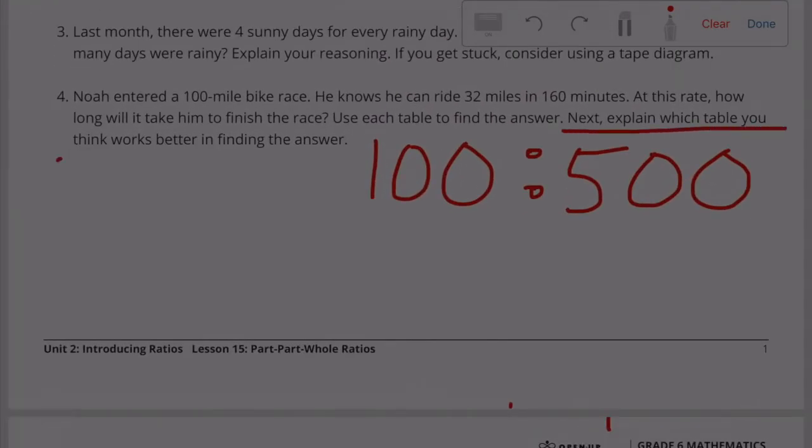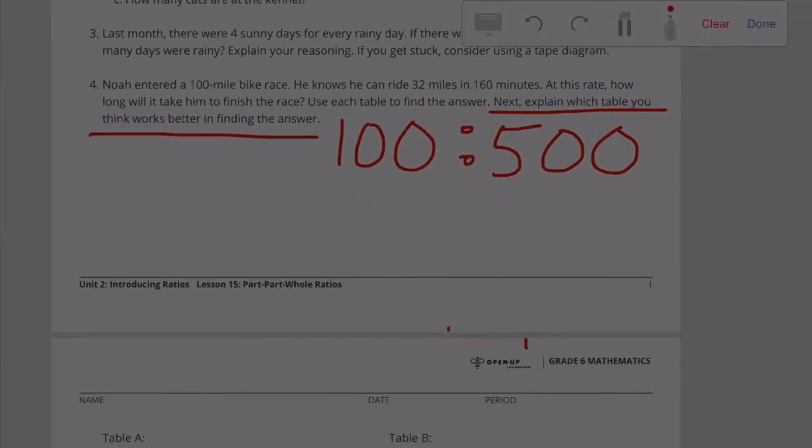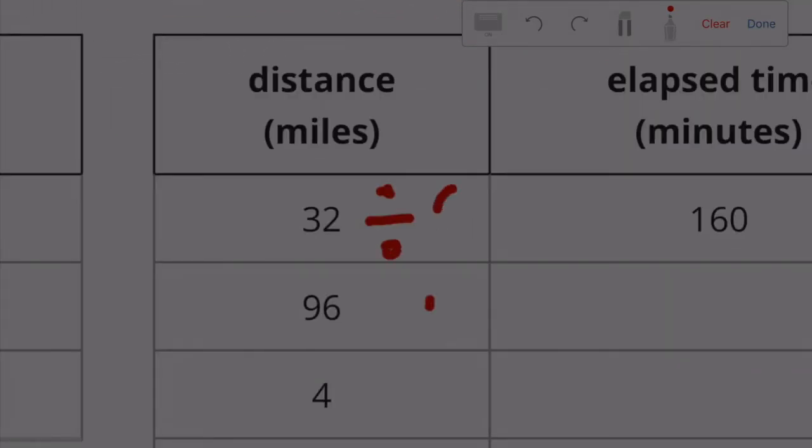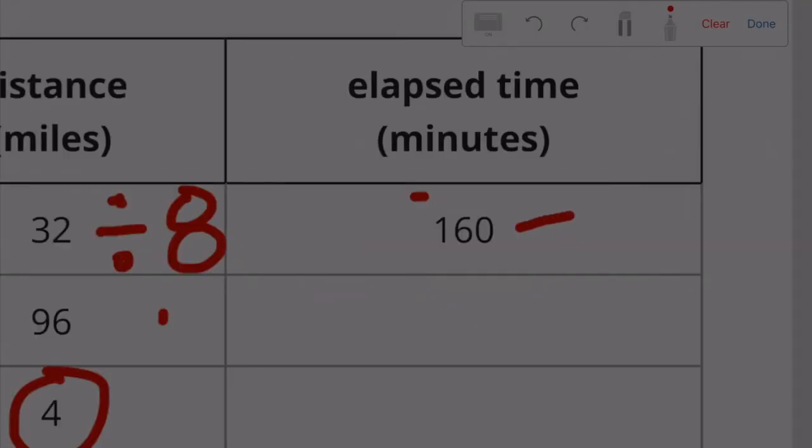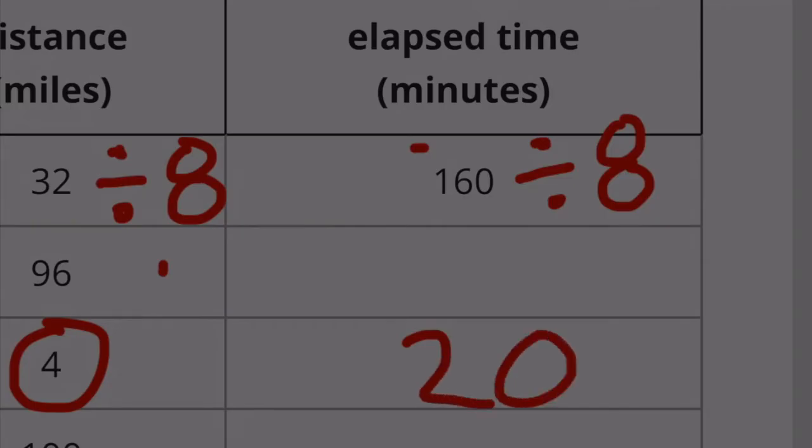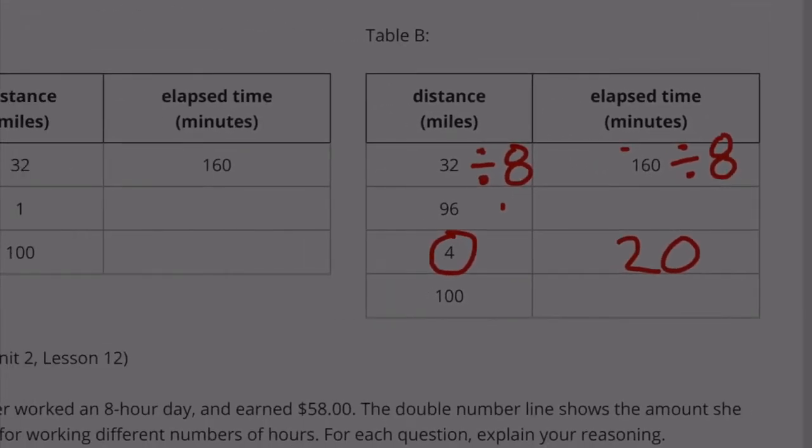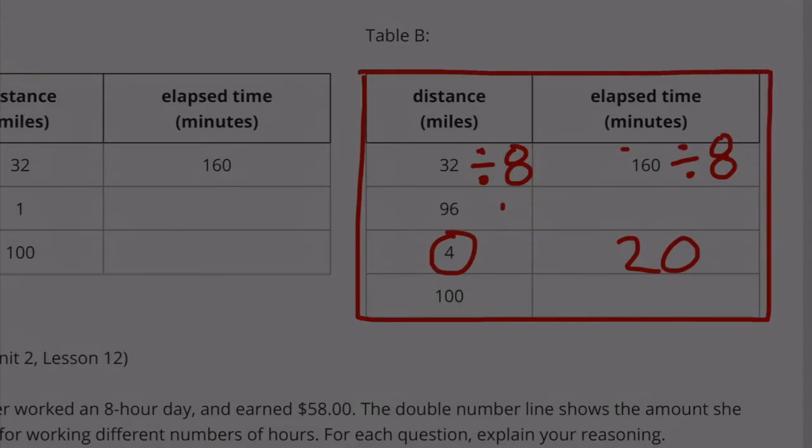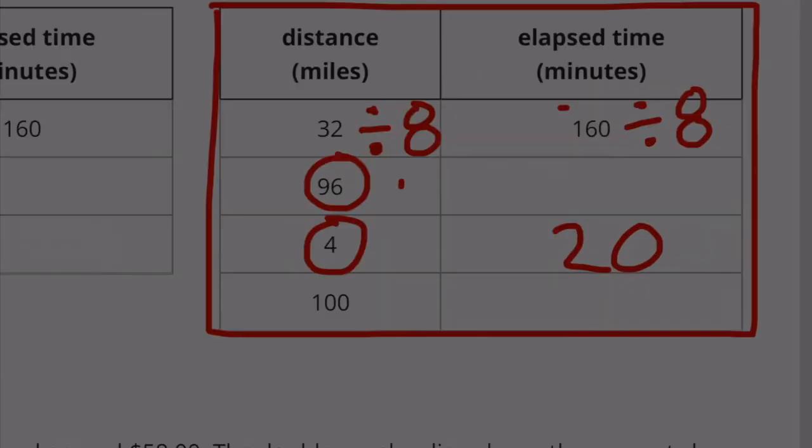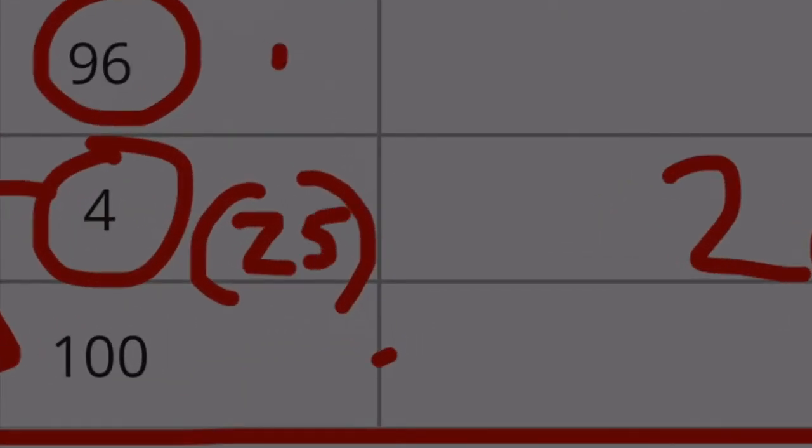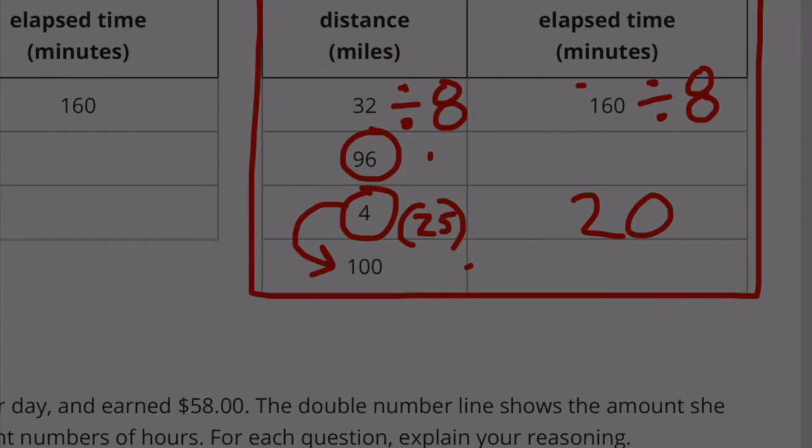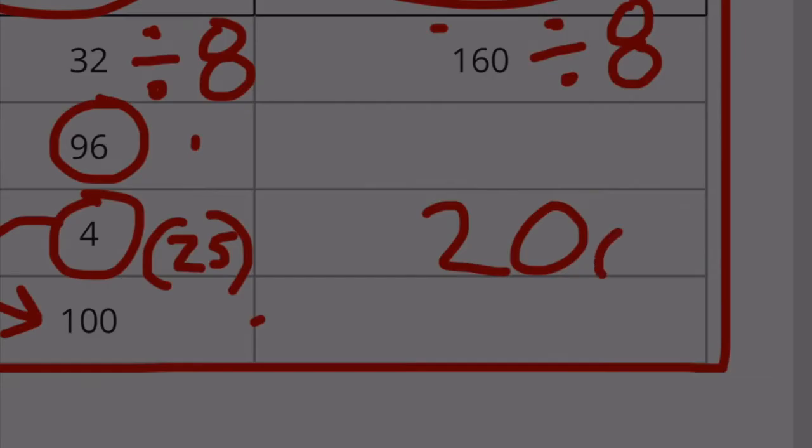Next, explain which table you think works better in finding the answer. 32 divided by 8 equals 4, so 160 divided by 8 equals 20. So I like this chart right here. I don't necessarily need the 96. I would turn the 4 into 100 by multiplying the 4 times 25 - 4 times 25 equals 100. And if I did it to this side, I need to do it to this side as well. So 20 times 25 gave me 500.